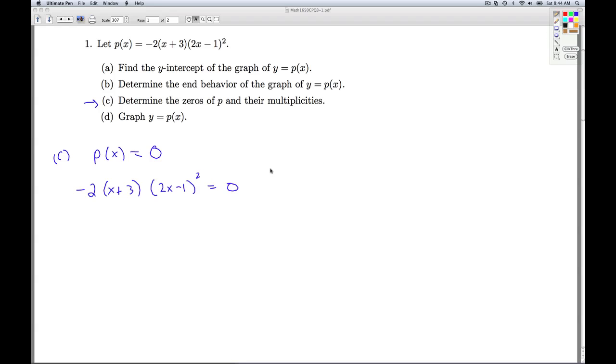So we set this thing equal to zero. And we look and see what makes each factor, each quantity equal to zero. From the X plus 3, if I set X plus 3 equal to zero, that gives me X equals negative 3. From the 2X minus 1 equals zero, I get X equals a half. So these are my two zeros, negative 3 and one half.